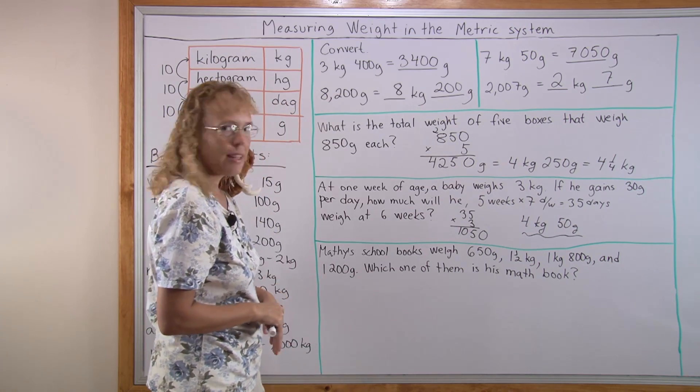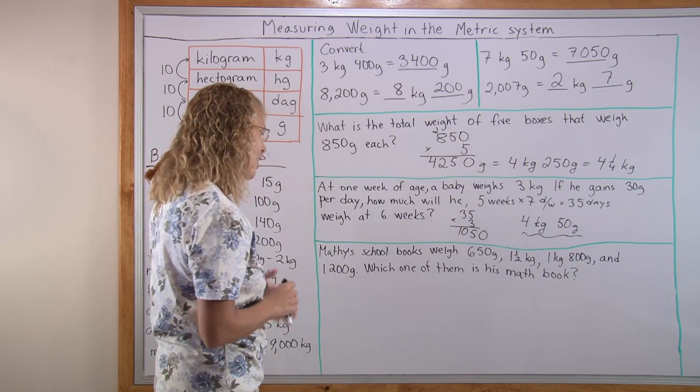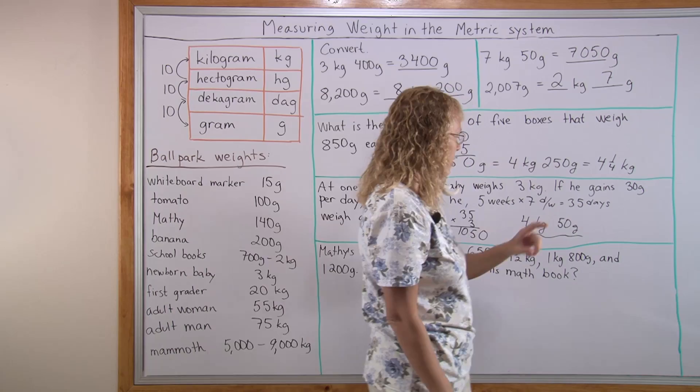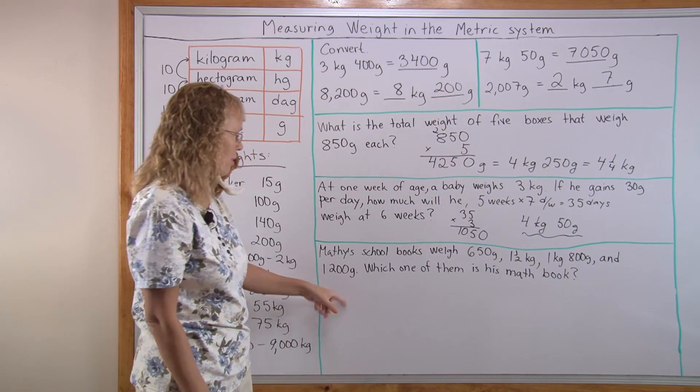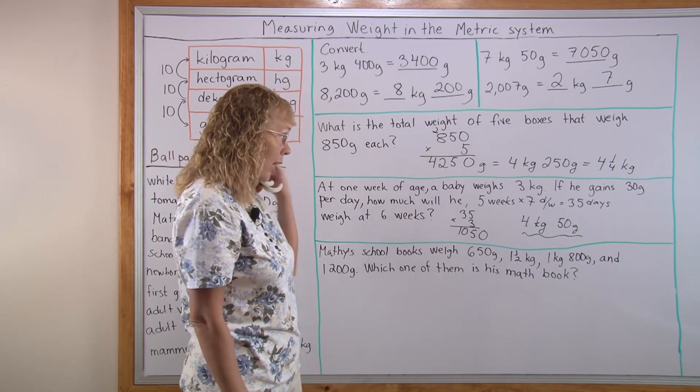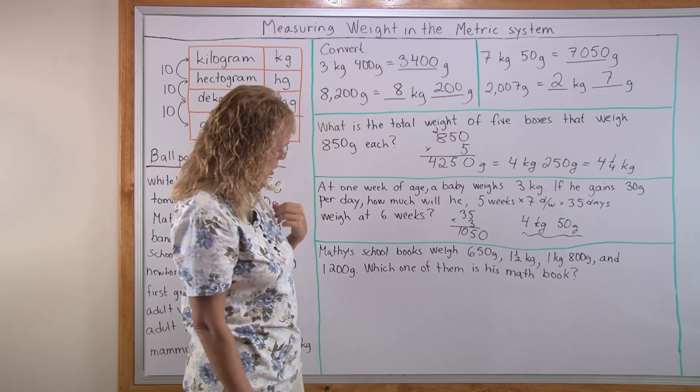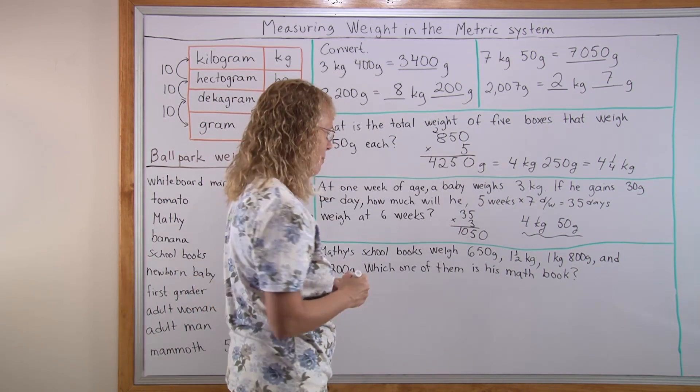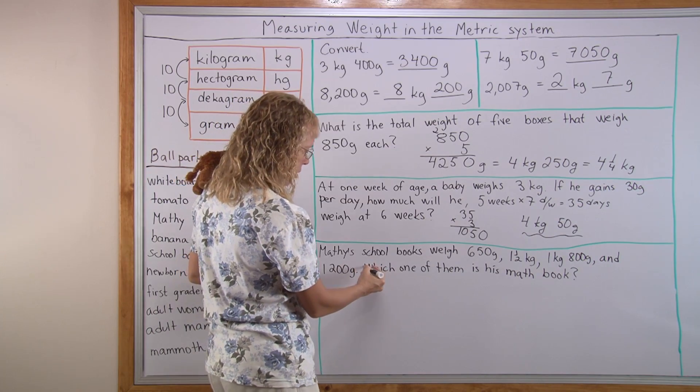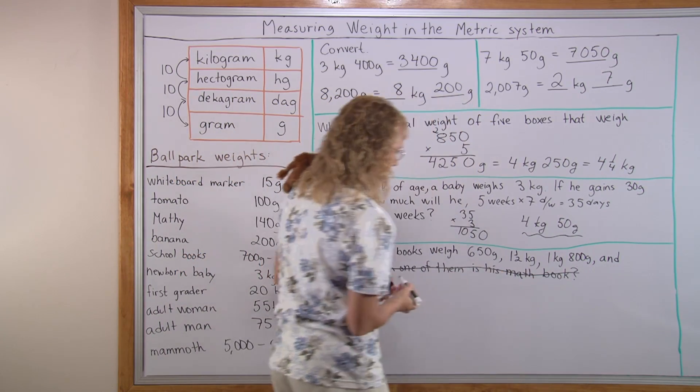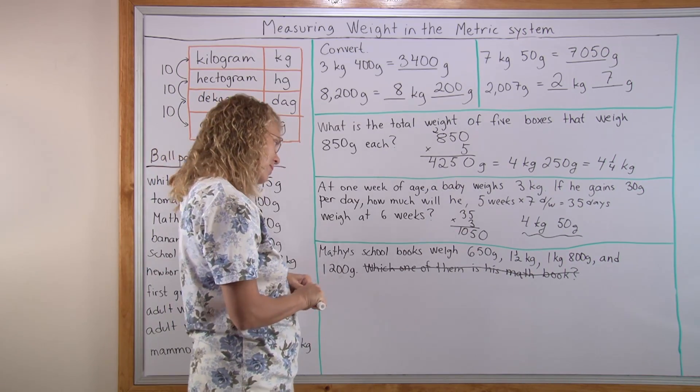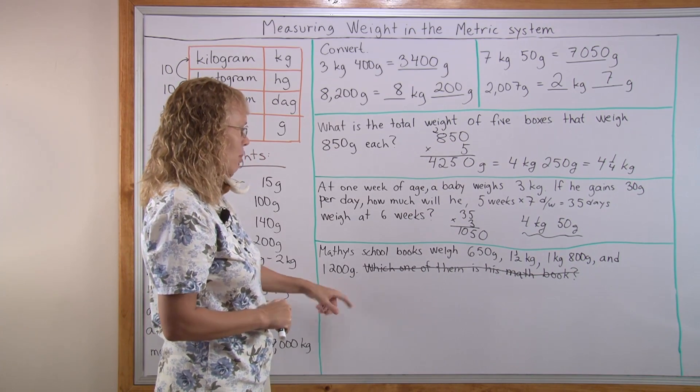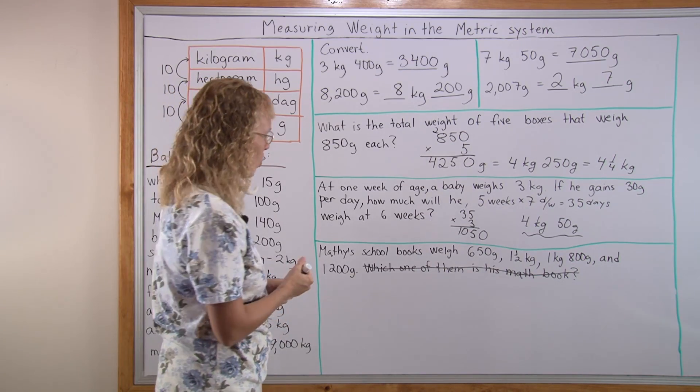Lastly, Matthew's school books. I think Matthew provided me with this problem. Matthew's school books weigh 650 grams, 1.5 kilograms, 1 kilogram and 800 grams and 1200 grams. Which one of them is his? Matthew! What did you do? That's not how the problem should read. He's just laughing. Matthew, we need to change this problem. He's saying that it's this one because it has so many numbers in it.